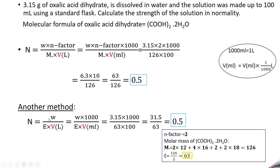An alternative method uses equivalent weight directly: N = (W × 1000) / (equivalent weight × V in mL). Equivalent weight = 126/2 = 63. So normality = (3.15 × 1000) / (63 × 100) = 3150/6300 = 0.5 N. Both methods give the same answer.